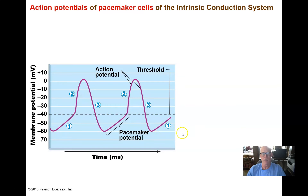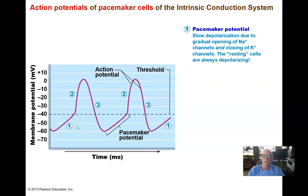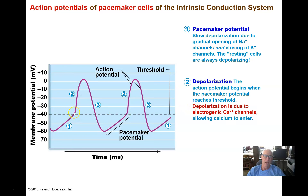Now let's take a look at a pacemaker cell — completely different electrical properties. The pacemaker cell starts out with a negative resting potential, say minus 60 millivolts, and slowly the cell depolarizes spontaneously. It never has a stable resting membrane potential. That's because potassium leak channels are closing and sodium channels are opening — so we're letting less positive charge out and more positive charge in. The cell depolarizes until it reaches threshold and has an action potential. Interestingly, the action potential is due to the opening of calcium channels rather than sodium fast channels — there are no sodium fast channels in pacemaker cells.